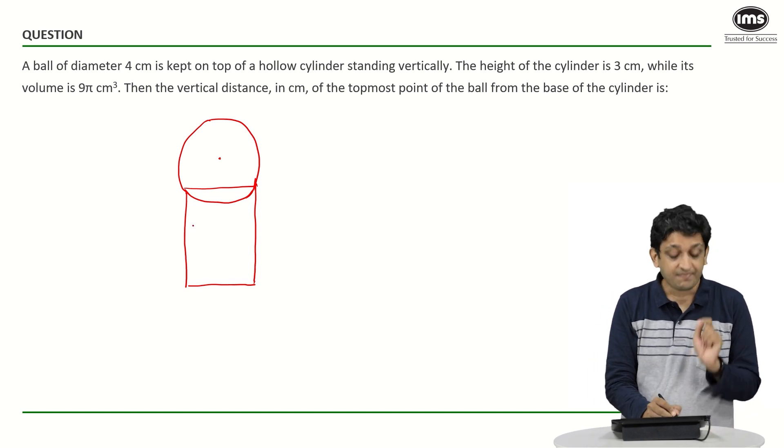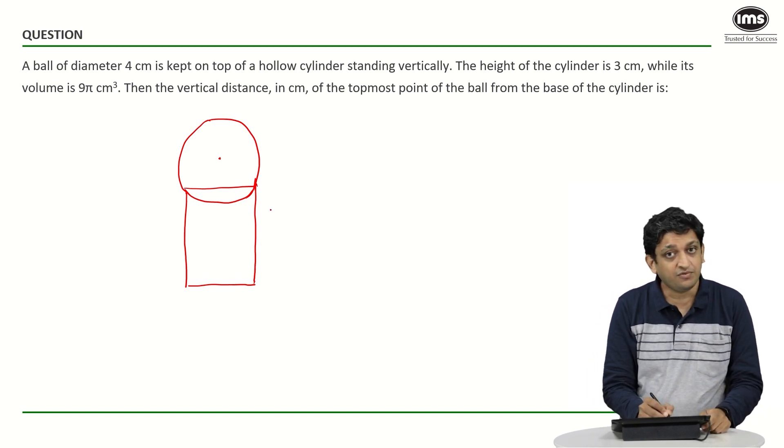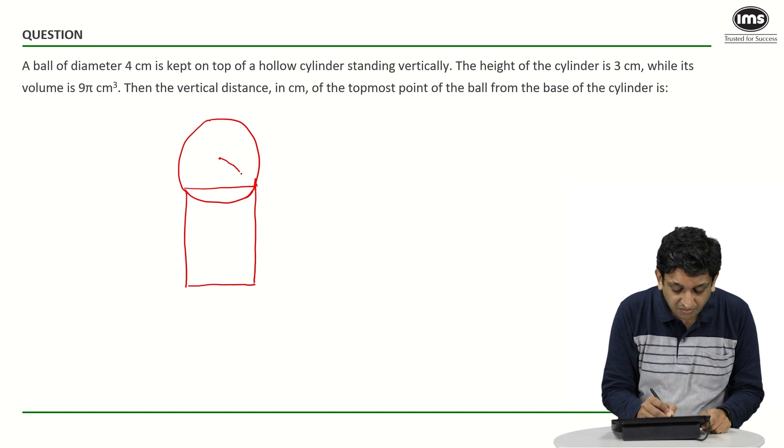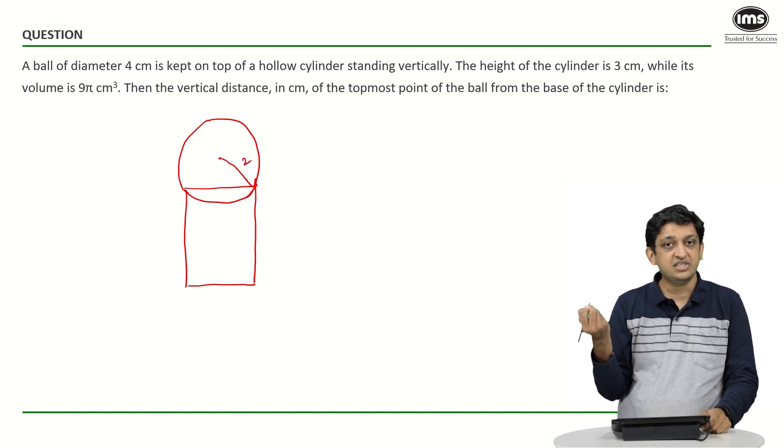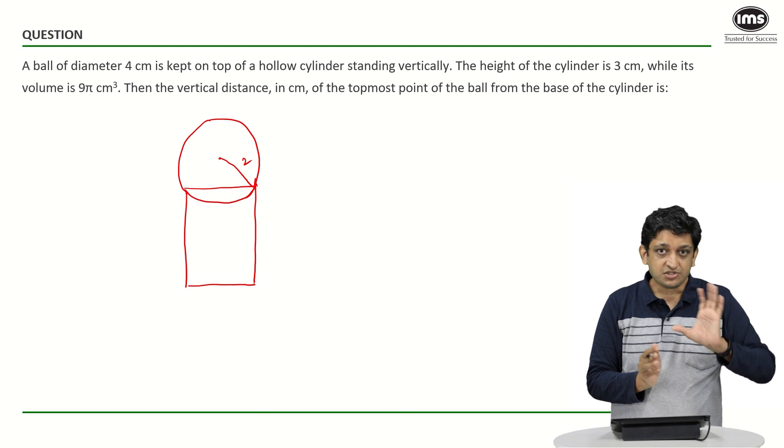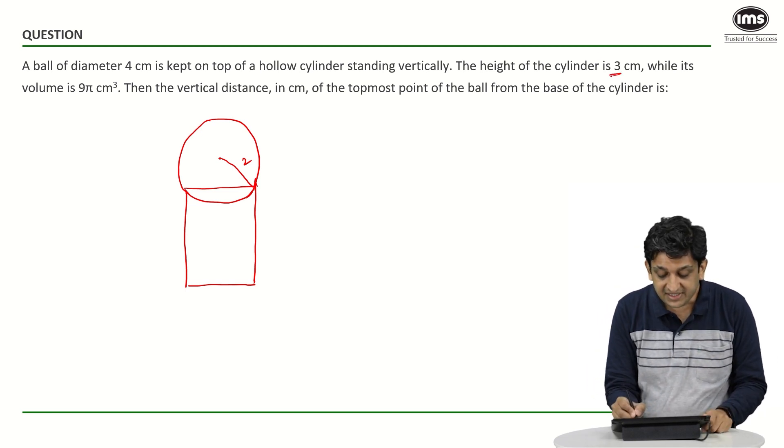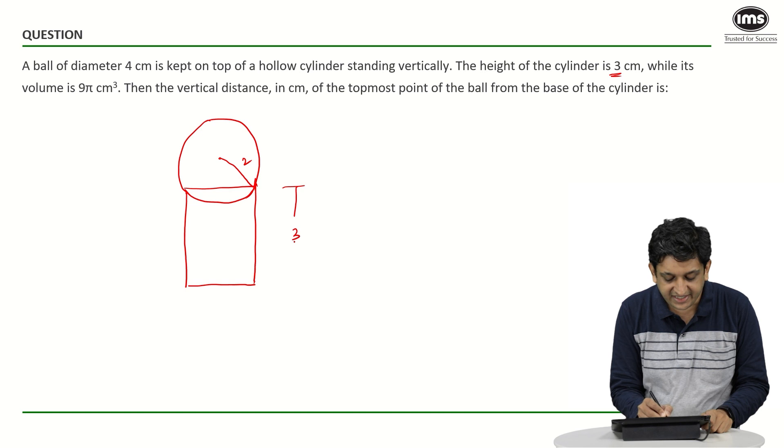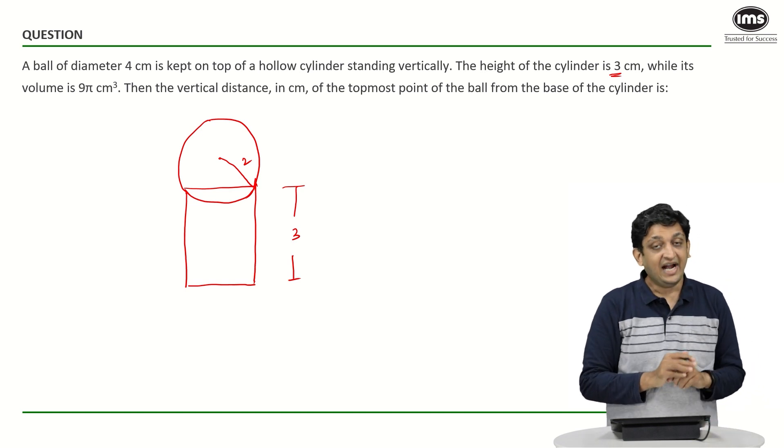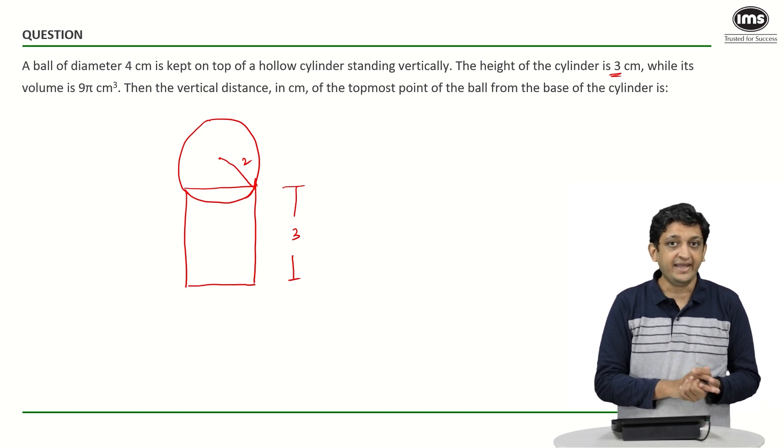So in this case what we know? We know that a ball of diameter 4 meaning the radius of this ball I am just drawing it here is 2 units. So we know that the radius of the spherical ball is 2 units. We know that the height of the cylinder is 3. So this height is going to be 3 centimeter and the volume of the cylinder is 9 pi cubic centimeter.